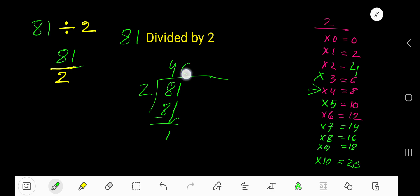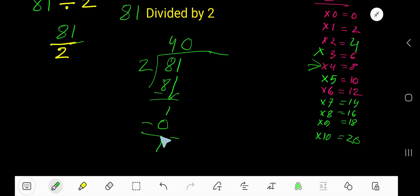is less than 2, so 0 times. 0 times 2 is 0. If you subtract, you are getting 1. So your answer is 40 remainder 1. But if you want to change your answer into decimal form, what will you do?